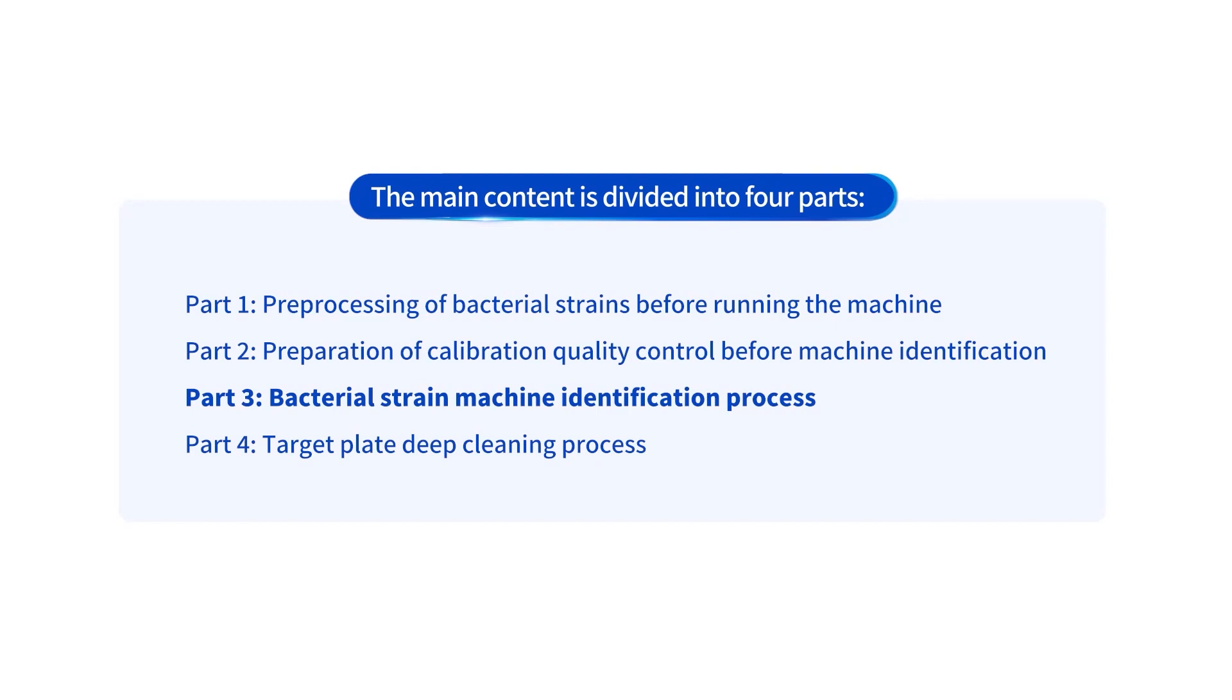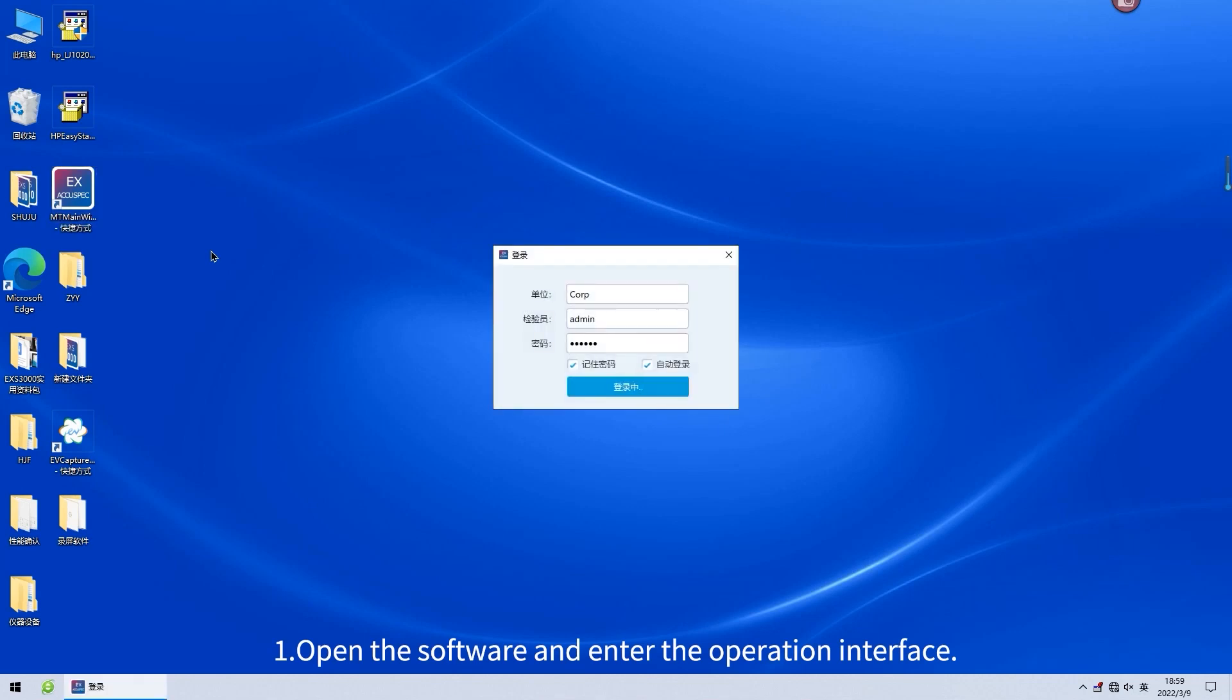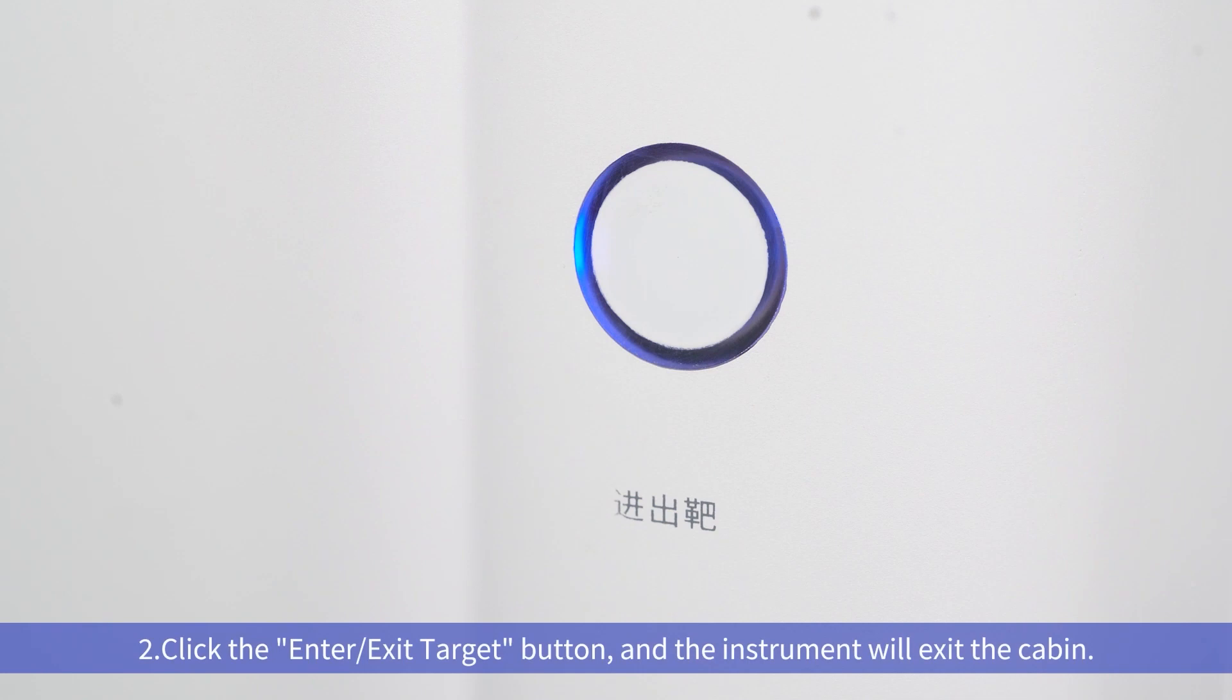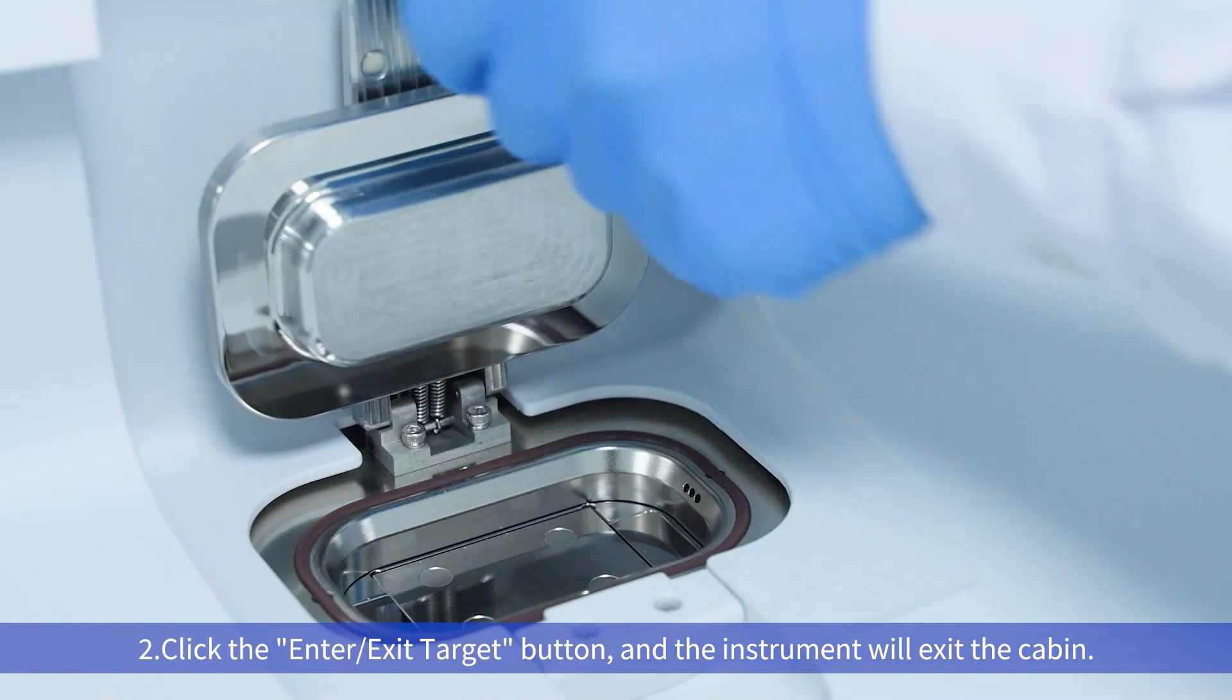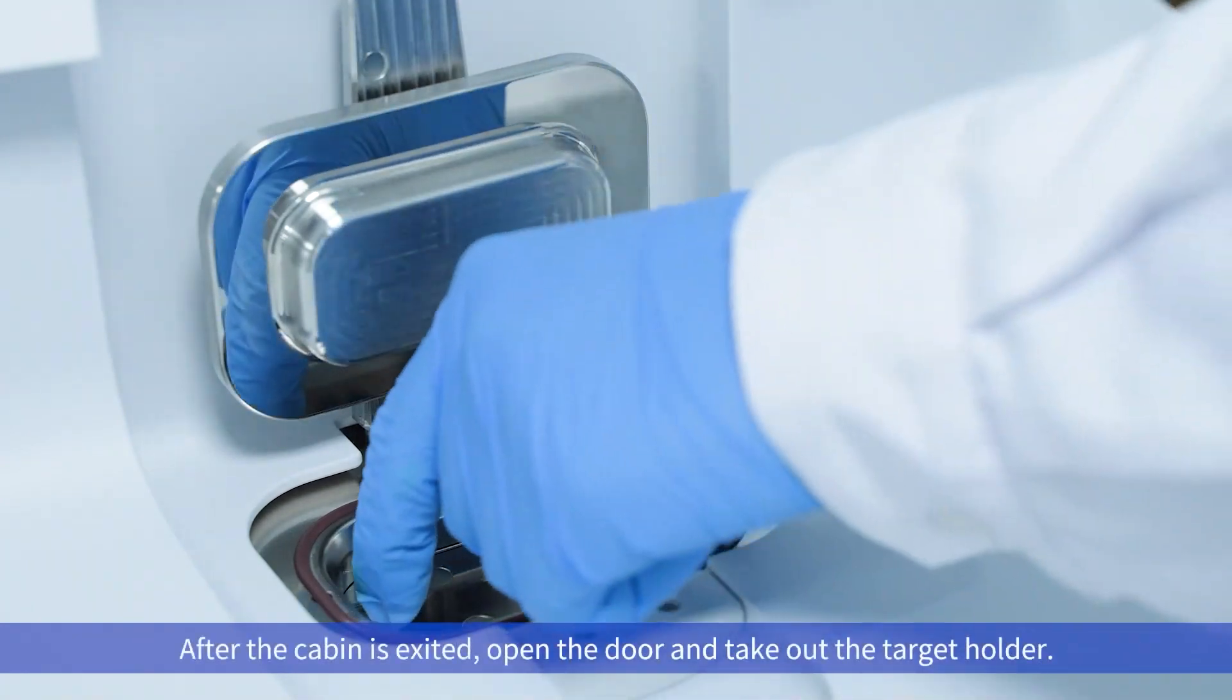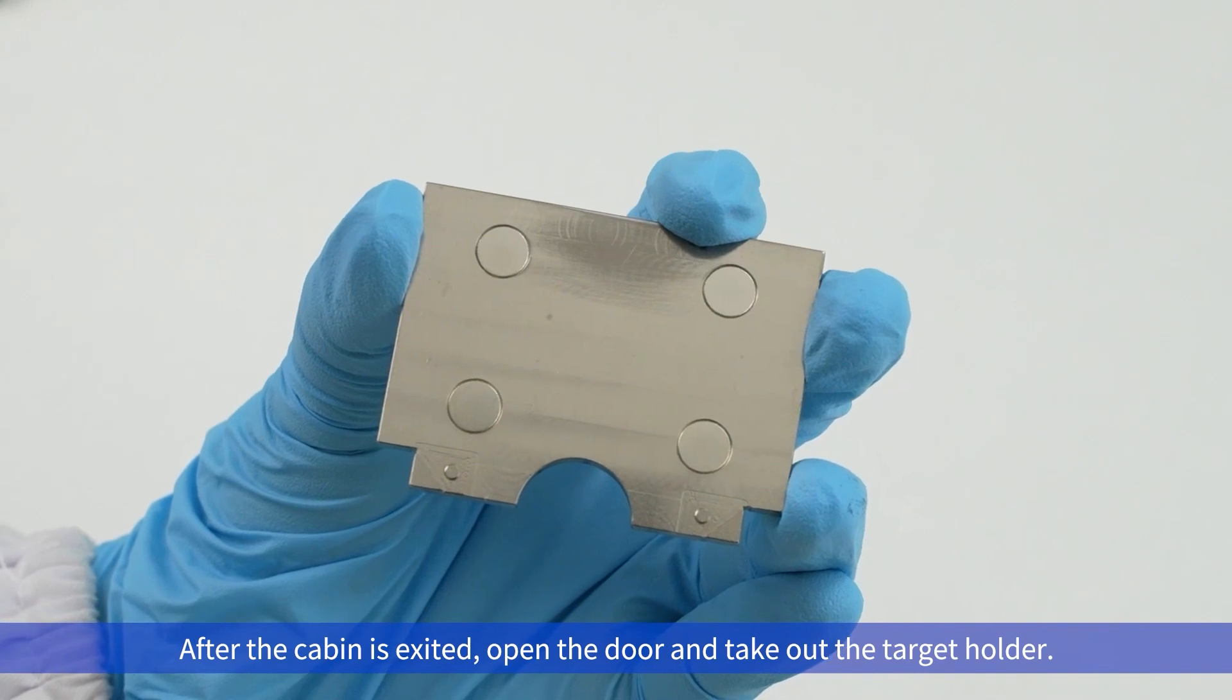Part 3: Bacterial strain machine identification process. First, open the software and enter the operation interface. Second, click the Enter-Exit target button and the instrument will exit the cabin. Third, after the cabin is exited, open the door and take out the target holder.